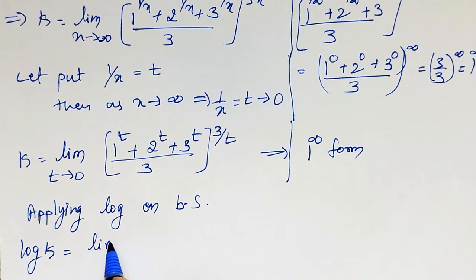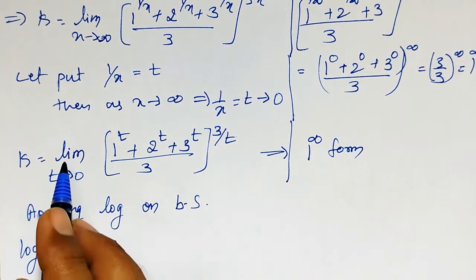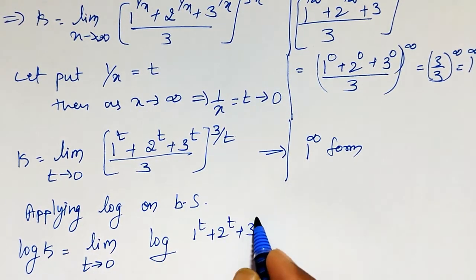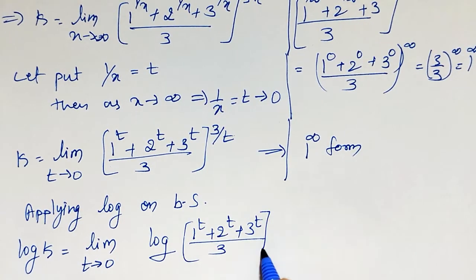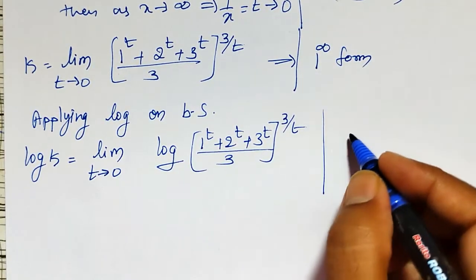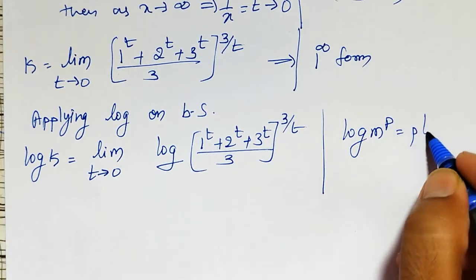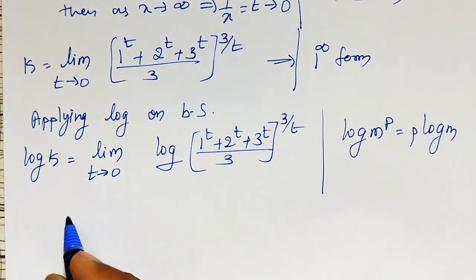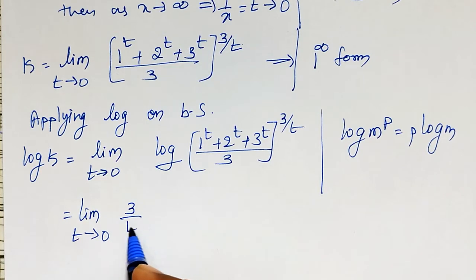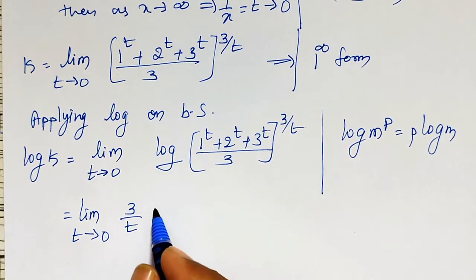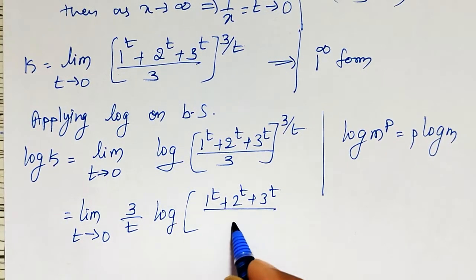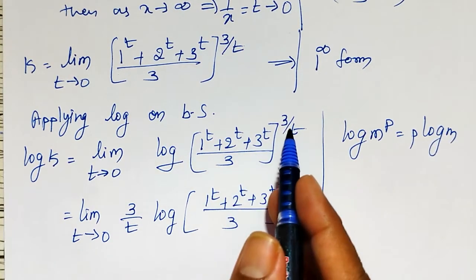Applying log on both sides, we get log k equals the limit as t tends to 0 of log((1^t + 2^t + 3^t) / 3) divided by (1/3) times t. Using the log property log(m^p) = p·log(m), I can write this as (3/t) · log((1^t + 2^t + 3^t) / 3).